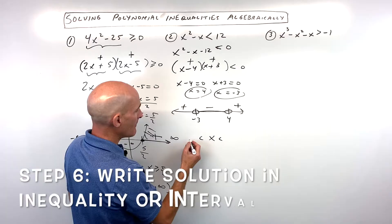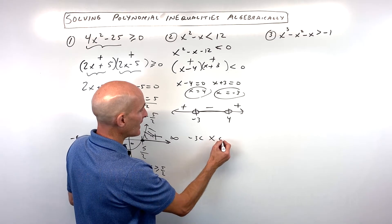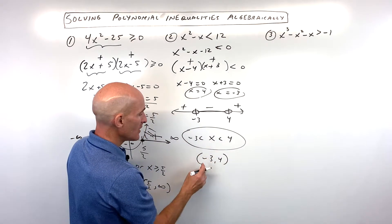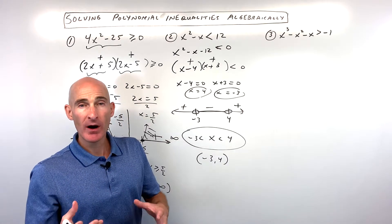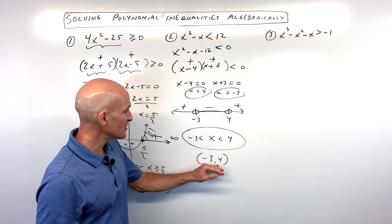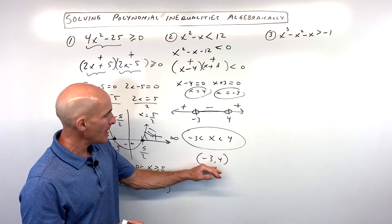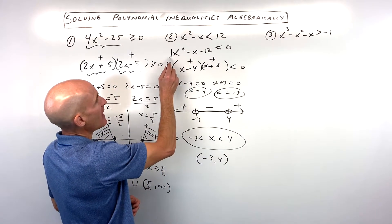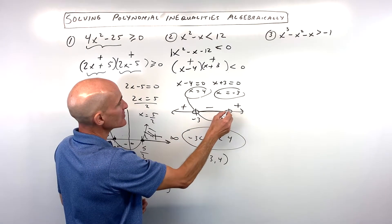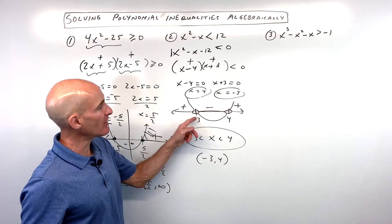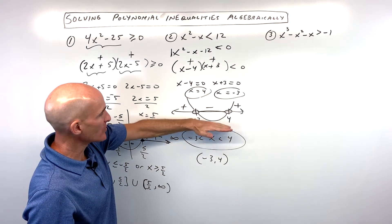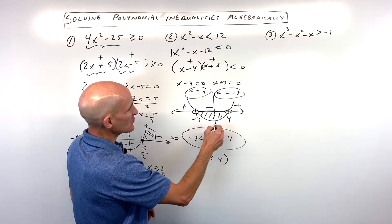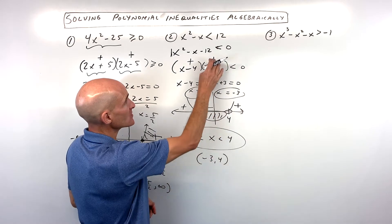You can write this as a compound inequality: x is greater than negative 3 and less than 4. Or in interval notation: from negative 3 to 4 with open parentheses. This is a parabola with a leading coefficient of positive one, so it opens up. We're asking where it's less than zero — meaning below the x-axis — and not equal to zero, because it was strictly less than. The answer is the interval between the two roots.